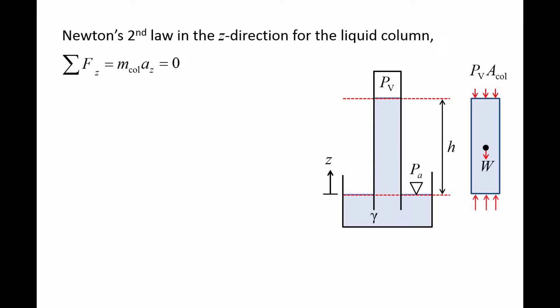Since the liquid column is not moving, there also must be a pressure force acting at the bottom of the column. Recall that the pressure does not change as you move horizontally through a static fluid. Let's label a couple of points on the barometer. Since point A is at the same elevation as point B in a continuous fluid, the pressure at point A must be the same as the pressure at point B. So the pressure force acting on the bottom of the liquid column is the atmospheric pressure times the column's cross-sectional area, A col.